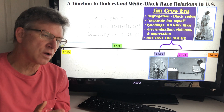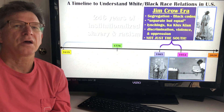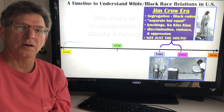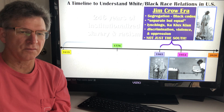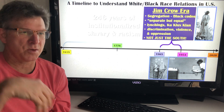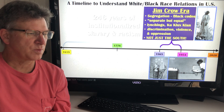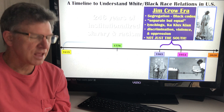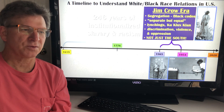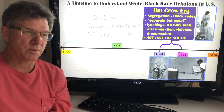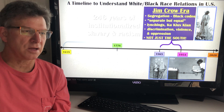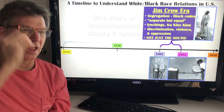Over this approximately 90-year period you also had the Ku Klux Klan running rampant — not just in the South but in almost every state. There were lynchings, where blacks could be strung up without a fair trial. Lynchings became public events that were actively promoted. This was a period of intense discrimination, intense violence, and intense oppression against the black population. And it happened in places including Connecticut, not just the South.